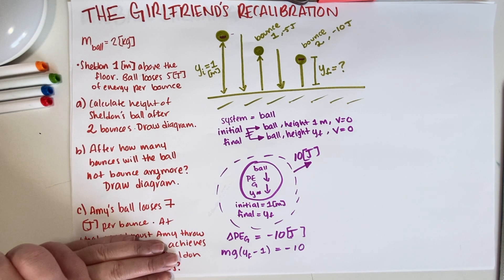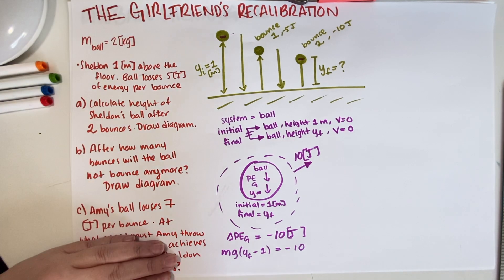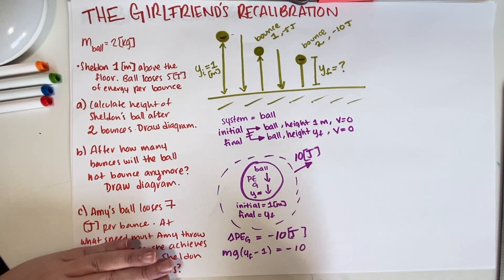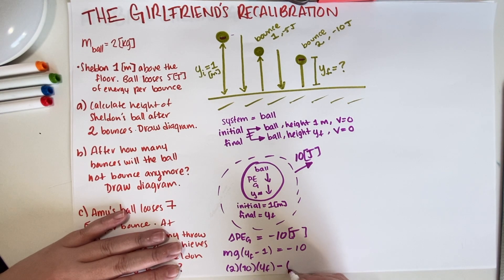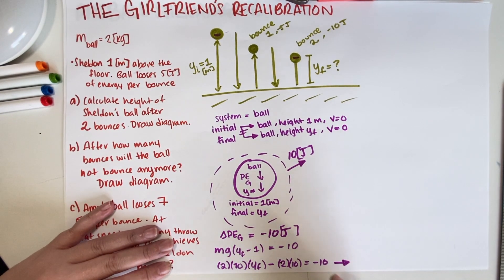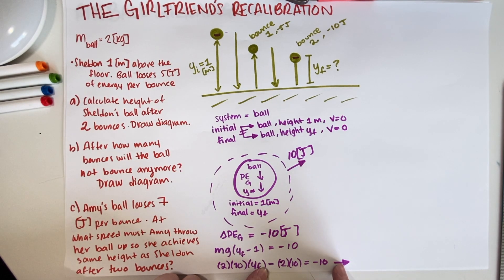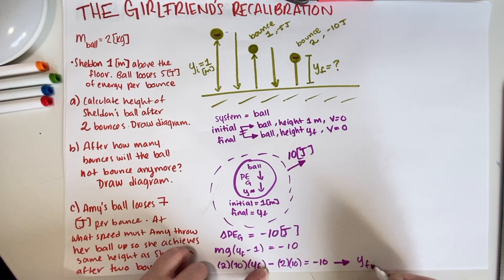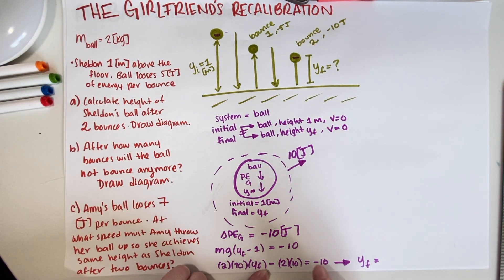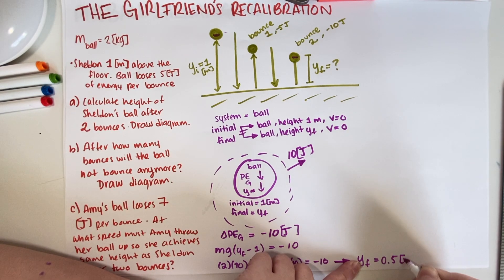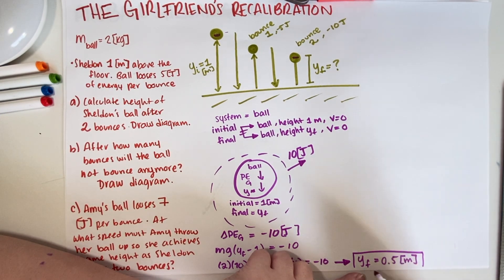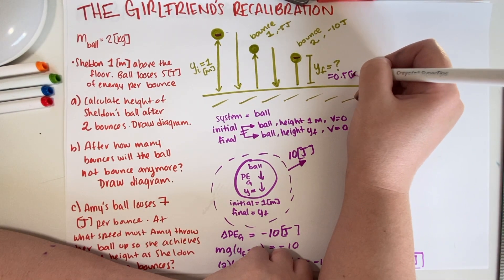So the mass is 2 kilograms: 2 × 10 × Y_final minus 2 × 10 = −10. That means −20 moves to the other side as +10, so Y_final equals 10 divided by 20, which is 0.5 meters. So the final answer is 0.5 meters — the ball is exactly halfway from the floor.